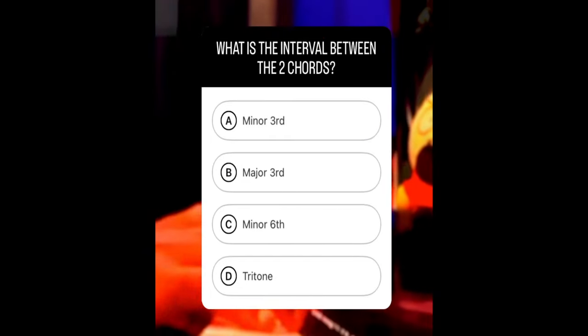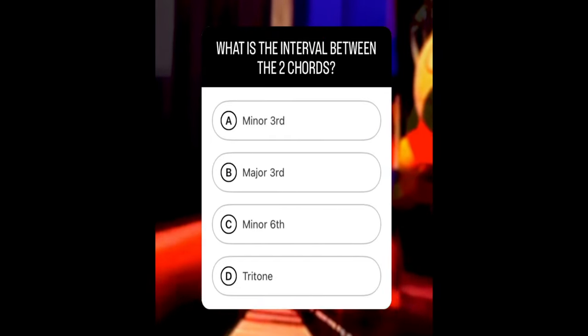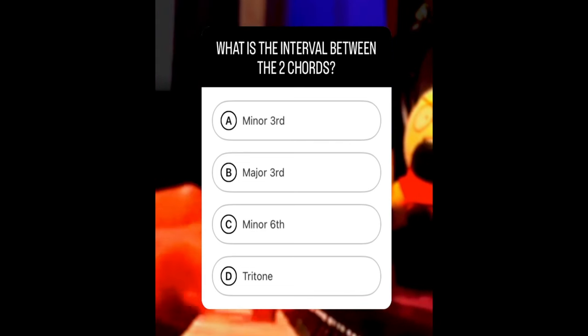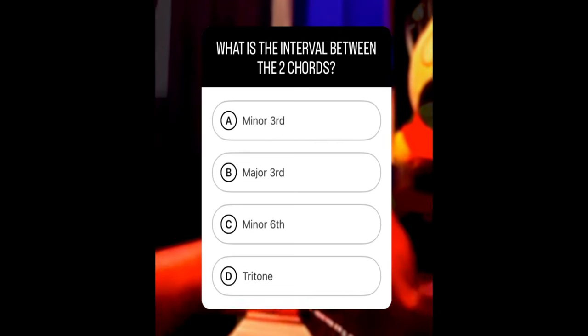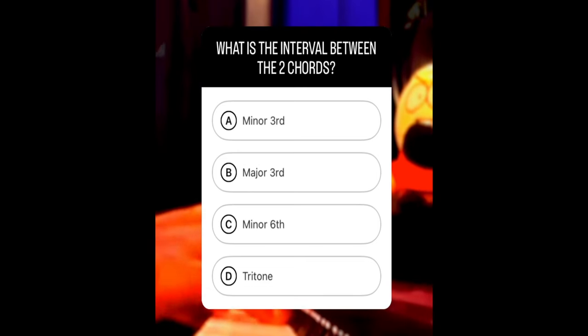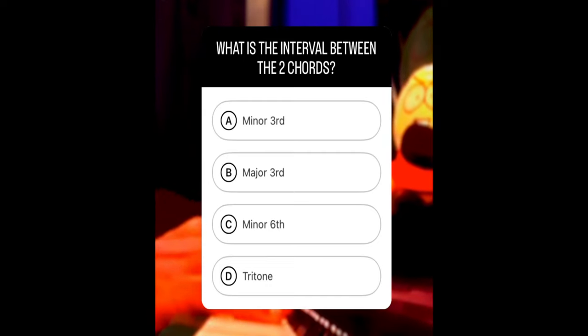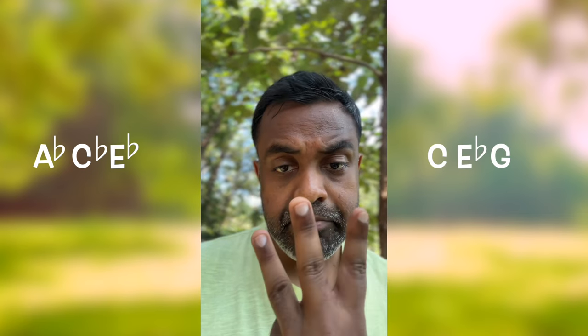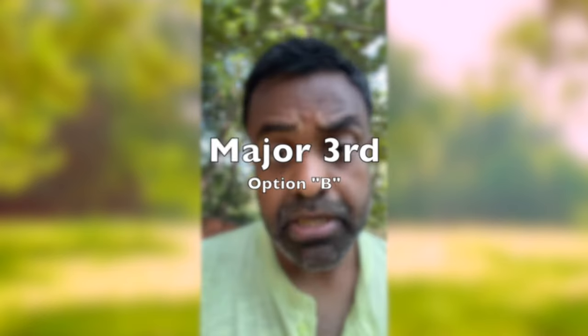Don't worry if you didn't get that one. Here's another similar question to guess the interval between the chords — another set of two chords being played for you, again two similar minors. The two minor chords would be A flat minor going to C minor, and they are separated by a major third interval. So major third is the interval that interconnects the two chords — A flat to C. Hope you got that. Let's move on.